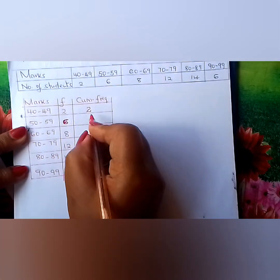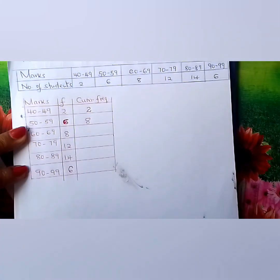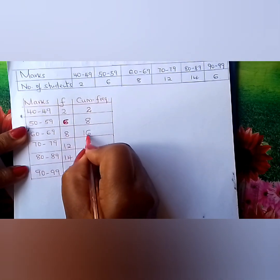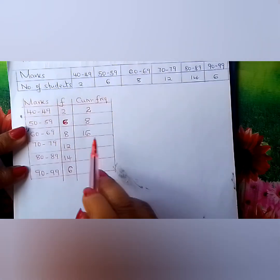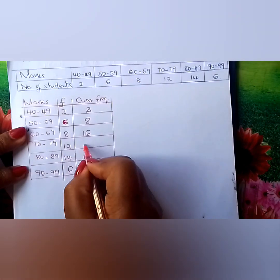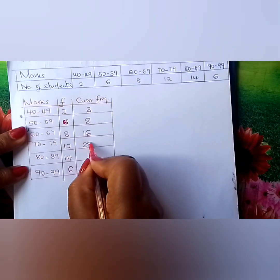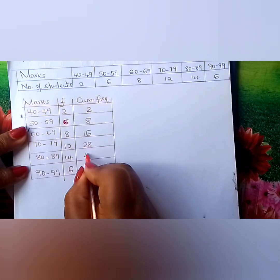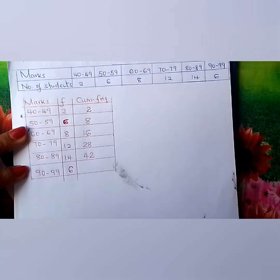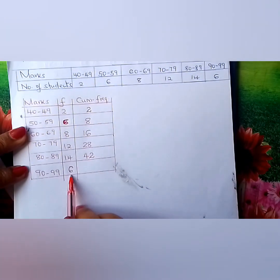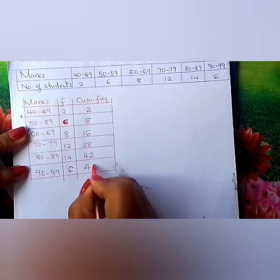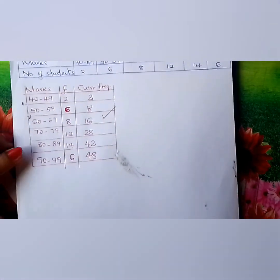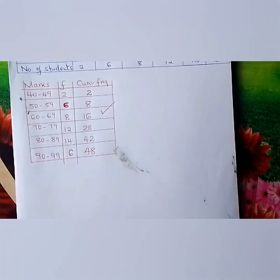2 plus 6 gives us 8. 8 plus 8 gives us 16. 16 plus 12 gives us 28. 28 plus 14 gives us 42. 42 plus 6 gives us 48. That column is for cumulative frequency — fill it in accurately.